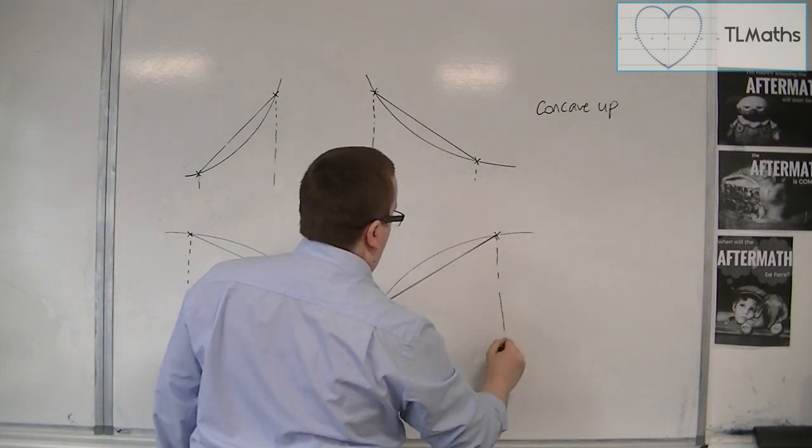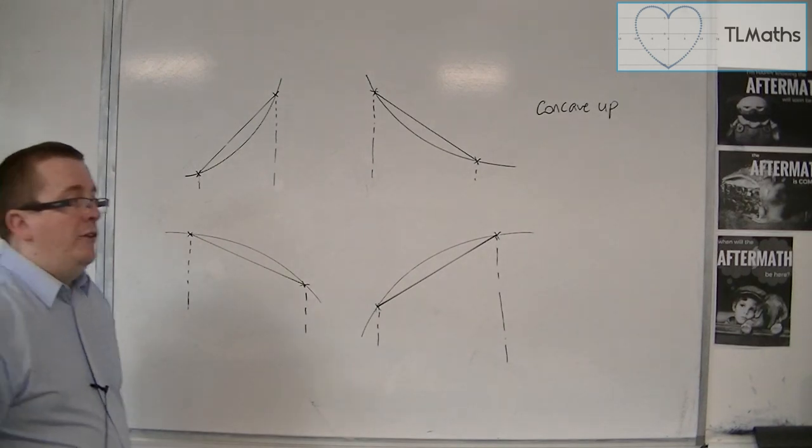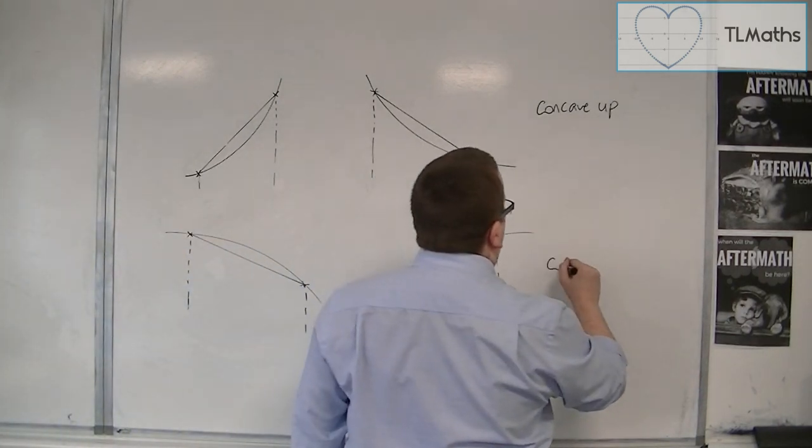Okay, so in both of these cases, we would get an underestimate, and these are known as concave down.